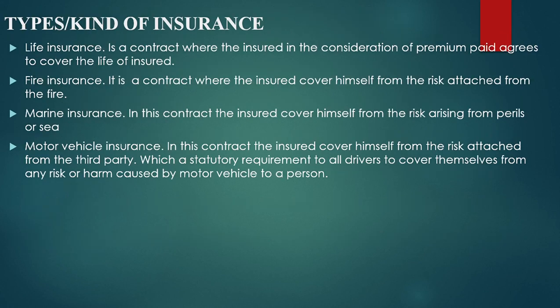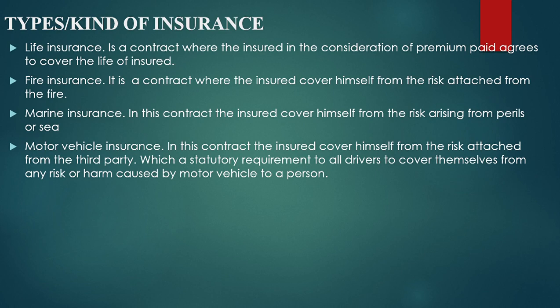There are various types of insurance contracts. Life insurance is a contract where the insurer, in consideration of premium paid, agrees to cover the life of the insured. Fire insurance is a contract where the insured covers himself from the risk attached to fire. Marine insurance is a contract where the insured covers himself from the risk arising from perilous seas. Motor vehicle insurance is a contract where the insured covers himself from third-party risk — a statutory requirement for all drivers to cover themselves from any harm caused by a motor vehicle to a person.